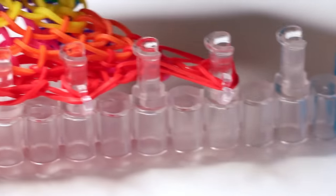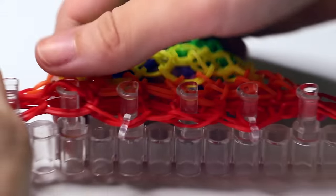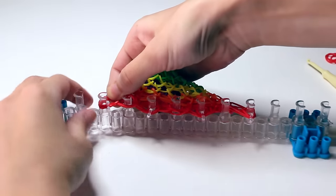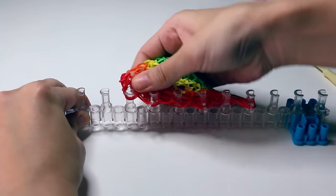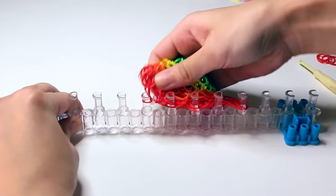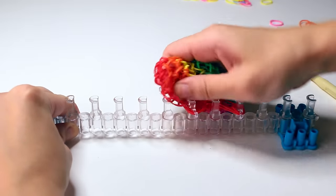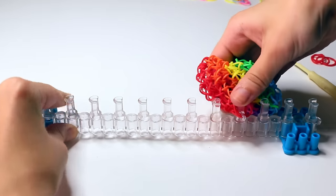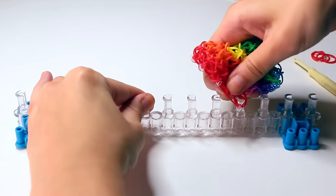And now it's safe to take the bracelet off the loom. Just grab one side and take it off the pin carefully. Then grab the rest of the bands and take them off the pin one by one. It's best to do this slow and carefully because you don't want all your hard work to go to waste.